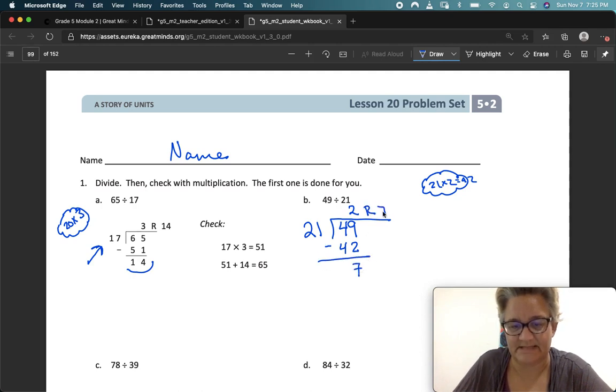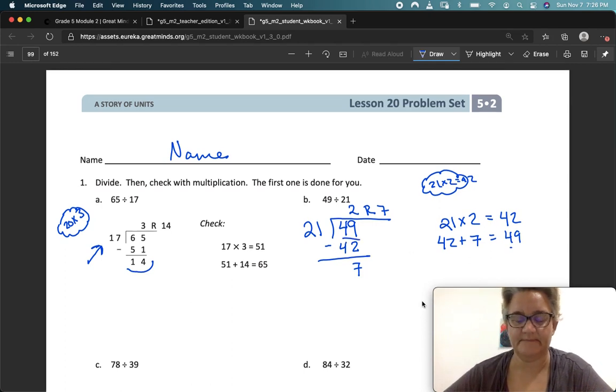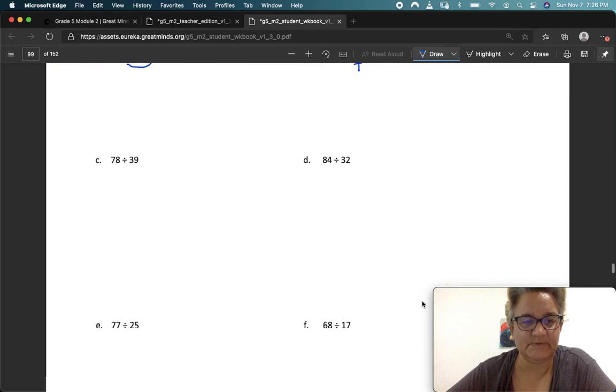Remainder 7. Now I'm going to check my work. So I'm going to take that divisor, and I'm going to multiply it by my quotient, 2, which equals 42. And then I'm going to take that 42, and I'm going to add my remainder to get 49. And 49 equals my dividend.